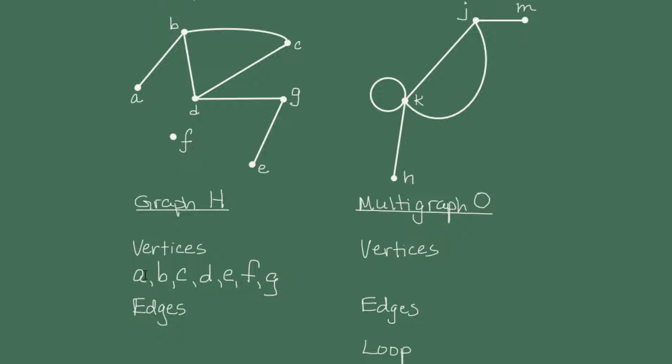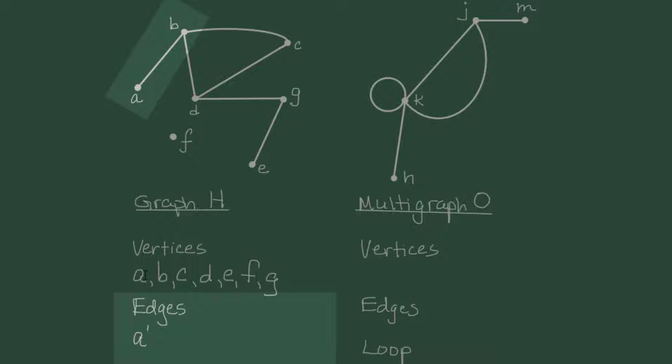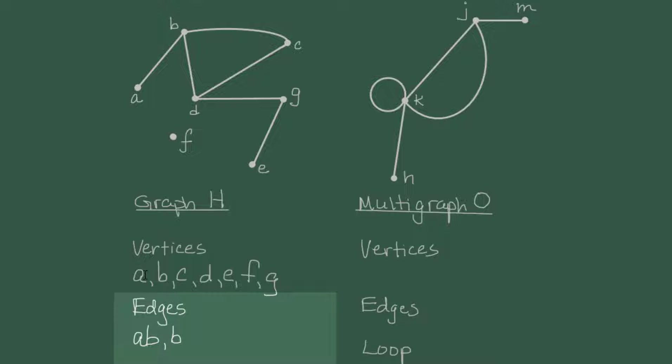Vertices A and B are connected by an edge, so we'll call that edge AB. There are also edges BC, BD, DG, and GE.